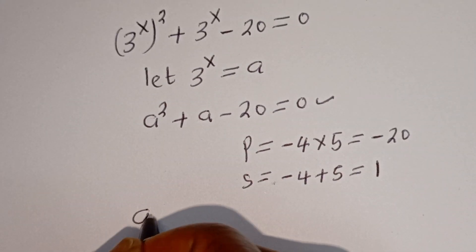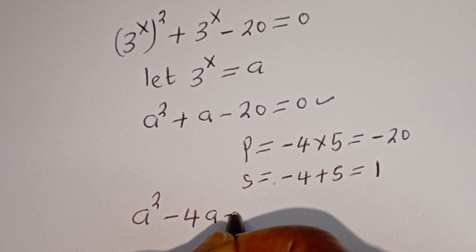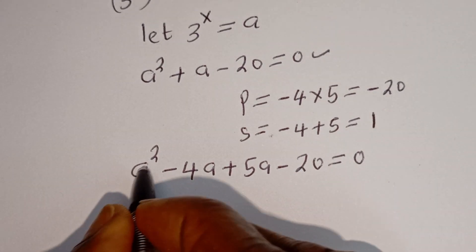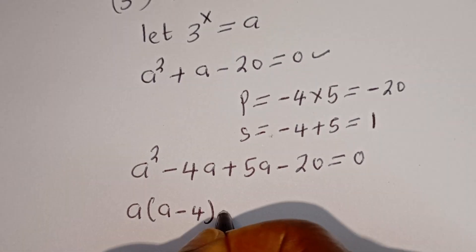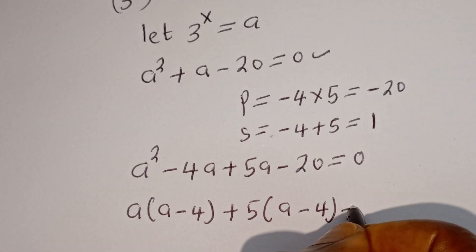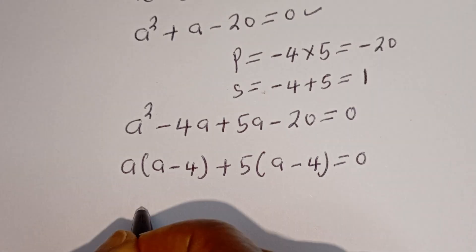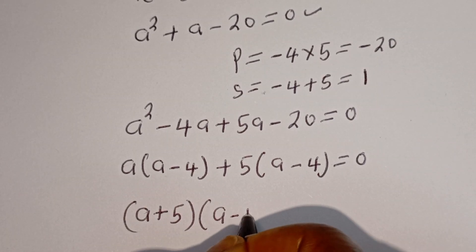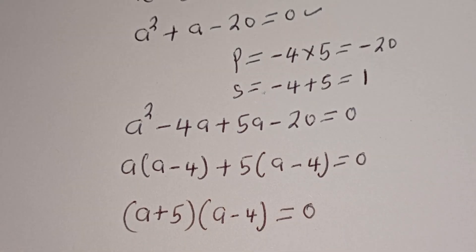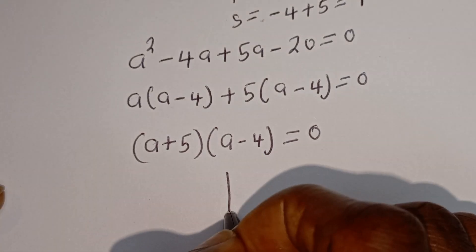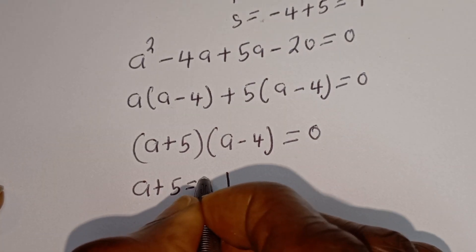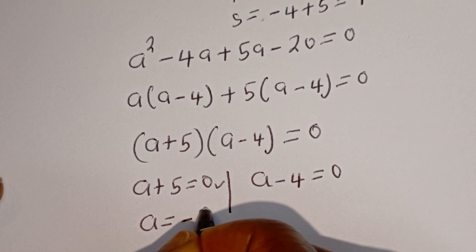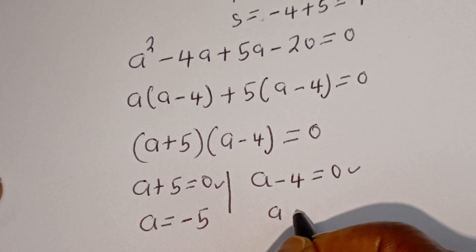Substituting, this equation can be written as a squared minus 4a plus 5a minus 20 equals 0. Here, a is common: we have a bracket a minus 4, plus 5 bracket a minus 4, equal to 0. So we get a plus 5, and a minus 4 is common, giving bracket a plus 5 bracket a minus 4 equals 0. From here, a equals minus 5, or a equals 4.